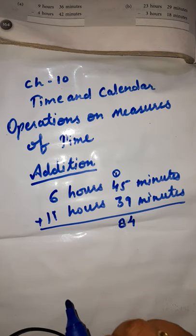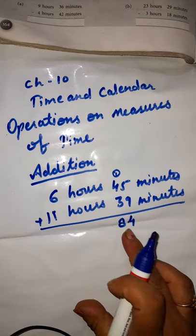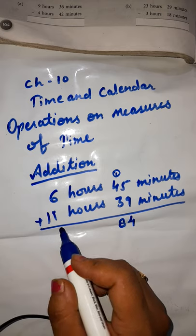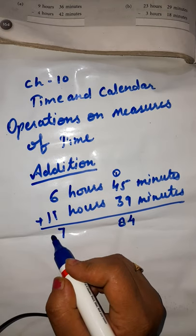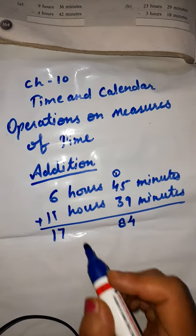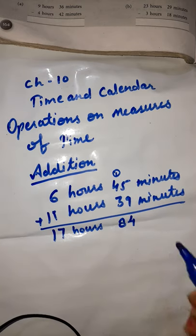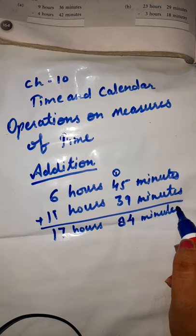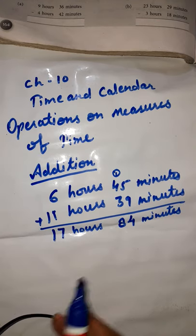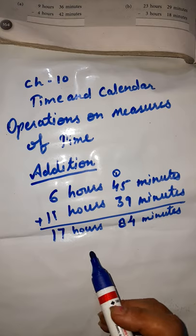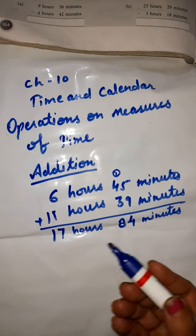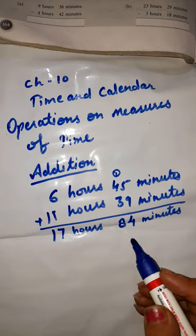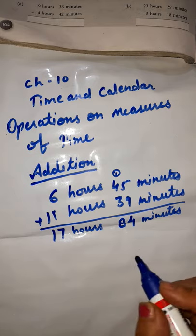So we get 84 minutes. And for hours: 6 plus 1 carry is 7, plus another 1 gives 17 hours. So we have 17 hours 84 minutes. Is this correct? Well it is correct, but remember one thing — we know that 1 hour is equal to 60 minutes.